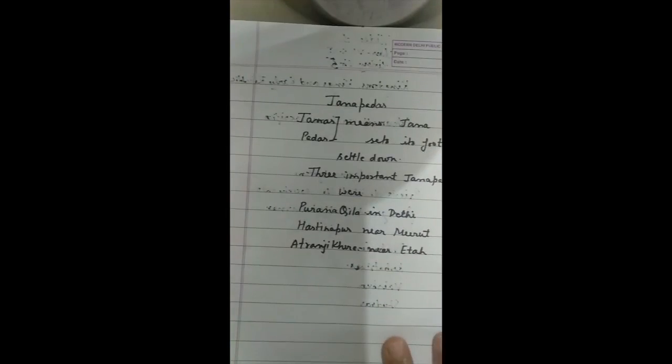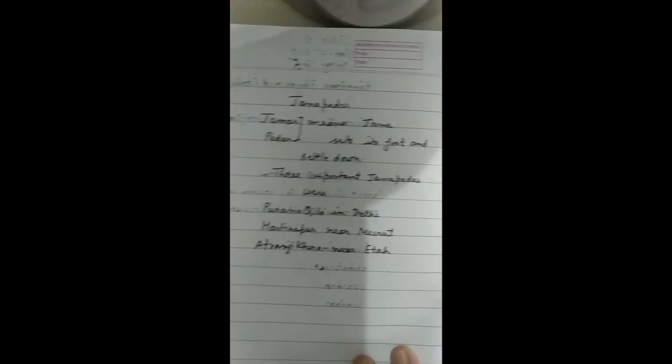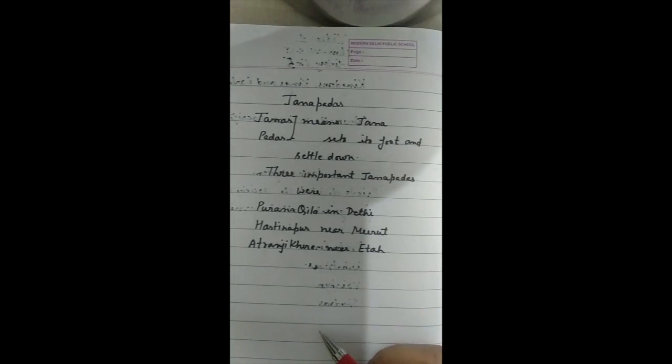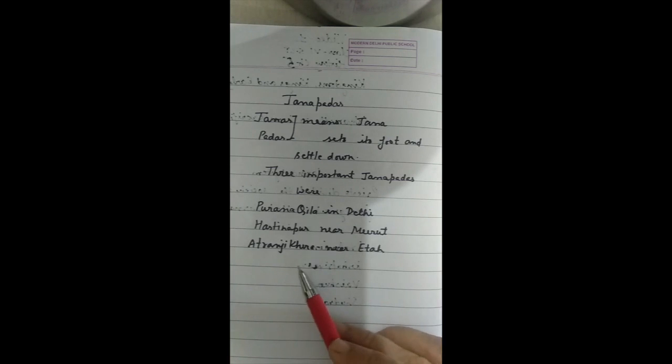Later, they classified some people as untouchables. These include some craftspersons, hunters and gatherers, as well as people who helped performing burials. The people who performed burials were also considered as Shudras. Many people were against this Varna system because they have the opinion that it is against the principle of equality.